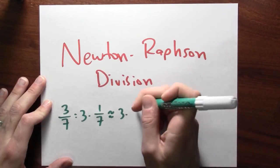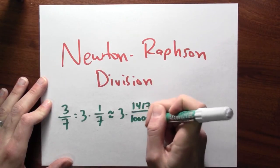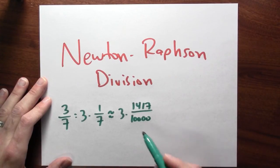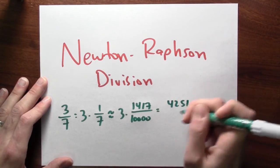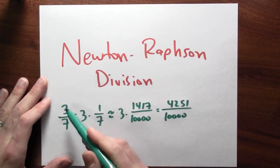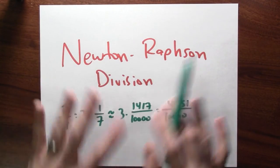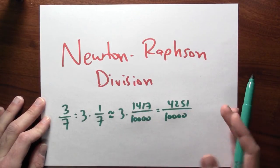right? We approximated 1/7 to be about 1,417 over 10,000. This was the second stage in the approximation. And 3 times 1,417 is 4,251 over 10,000, which isn't so far off of 3/7, right? The point, though, is that it's division, but it's division that only involves repeated adding, subtracting, and multiplying.